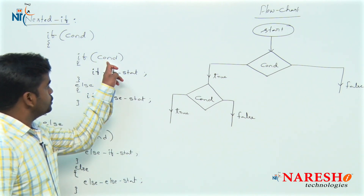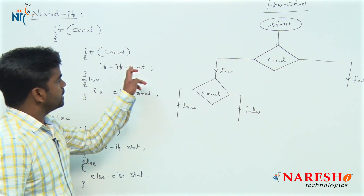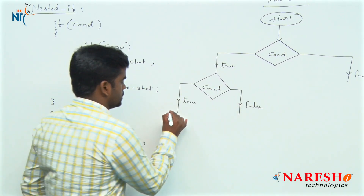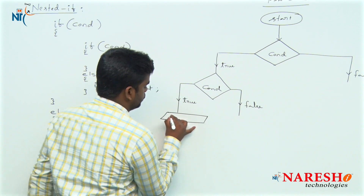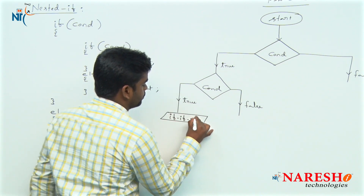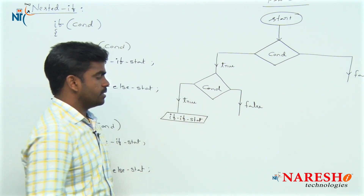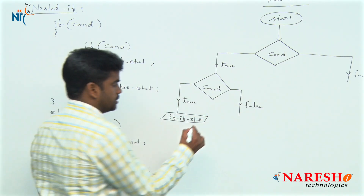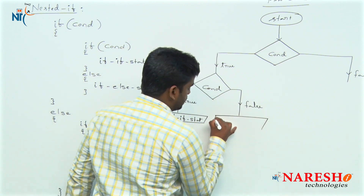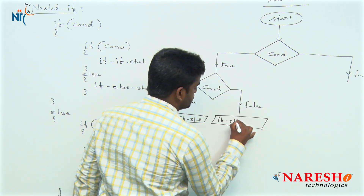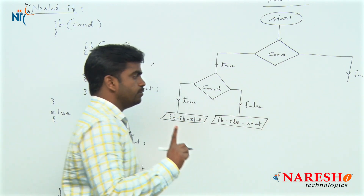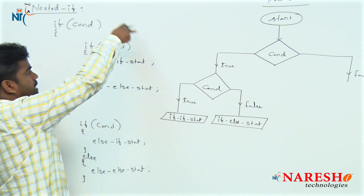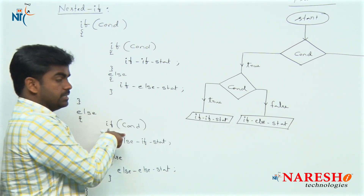If outer condition is true and inner condition is also true, then outer if block statements and inner if block statements execute. If the inner condition is false, the inner else statements execute — only one block executes. If outer condition has failed completely, control comes directly to the outer else block.